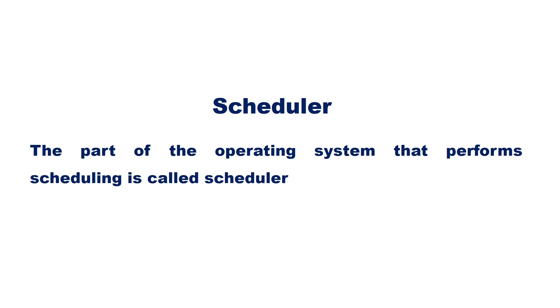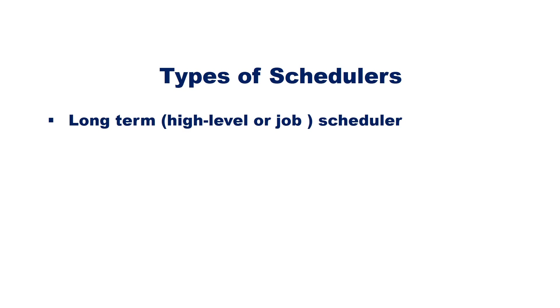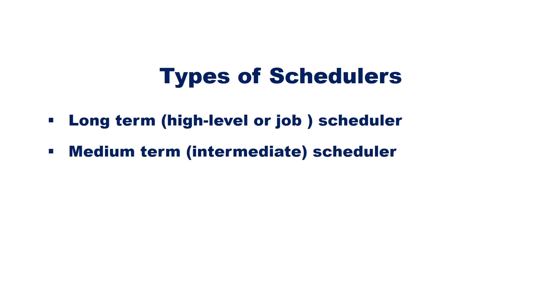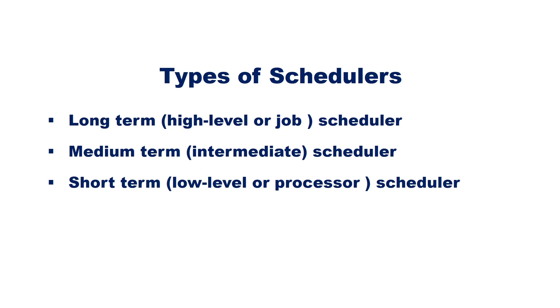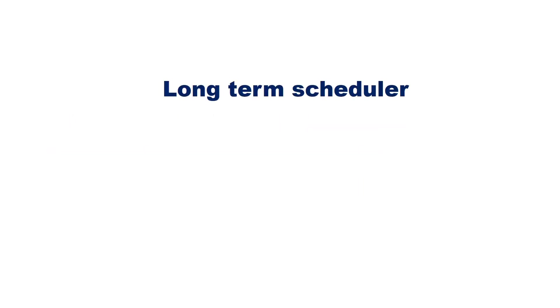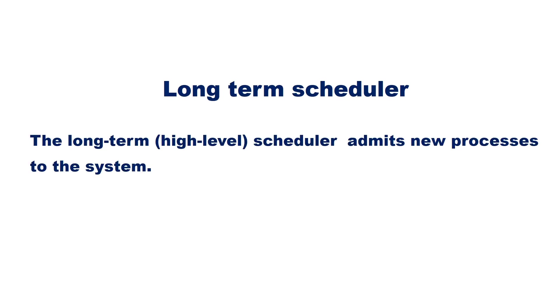There are three types of schedulers: long-term (or high-level or job) scheduler, medium-term (or intermediate) scheduler, and short-term (or low-level or processor) scheduler. Long-term scheduling is performed when a new process is created.